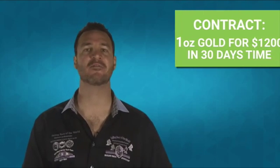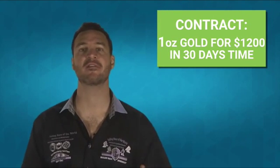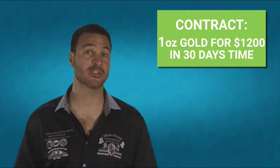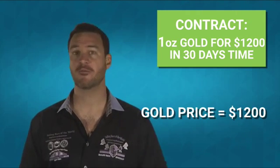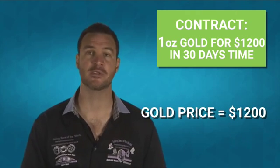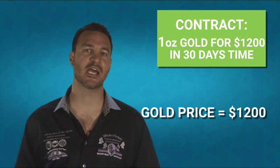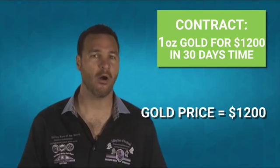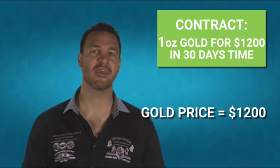Point number three: contracts are often settled and secured in value only and not in the actual commodity. For example, I may have a contract to buy one ounce of gold from you for $1,200 in 30 days. The current price of gold is $1,200 per ounce, and so we have a 50-50 chance of making or losing money. You choose to charge me a small fee for that privilege.